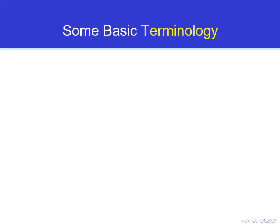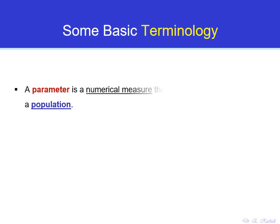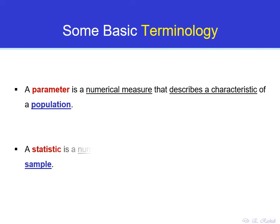We use certain numerical measures to describe the characteristics of a group that we want to study. You are already familiar with one of those measures — the average. There are other measures we'll learn more about later. When we study a population, the measures used to describe its characteristics are called parameters. When we study a sample, those measures are called statistics.